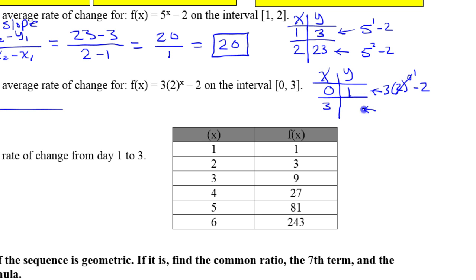So now here, I'm plugging in 3 for x. So that's going to be 3 times 2 to the 3rd power minus 2. Well, that's going to be 3 times 8, right? 2 to the 3rd power is 8 minus 2. 3 times 8 is 24 minus 2, and so that'll be 22.